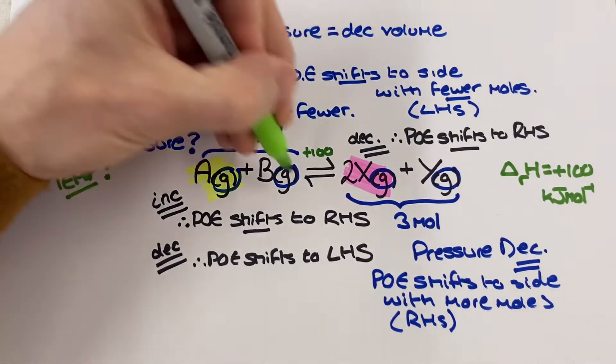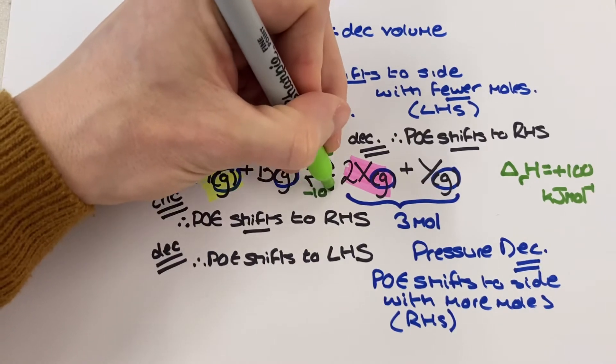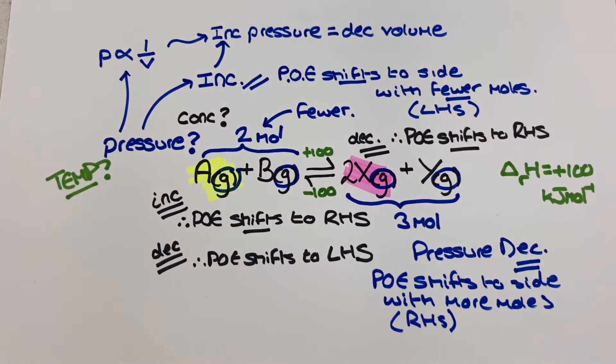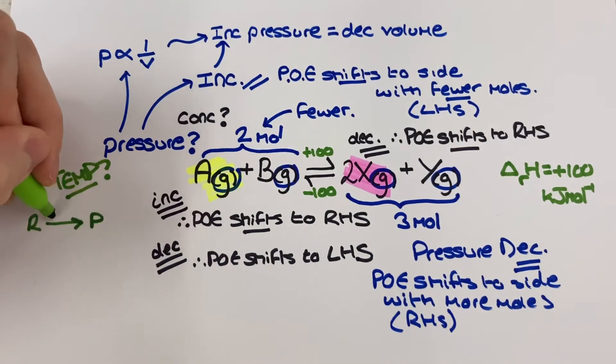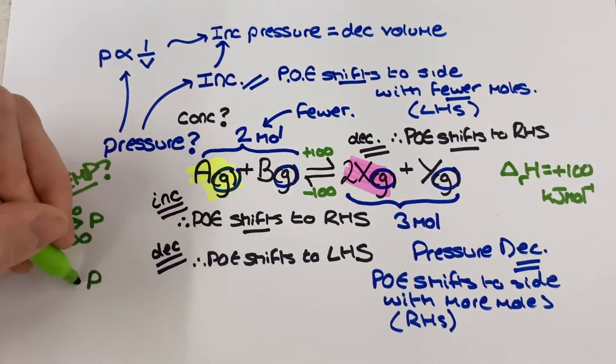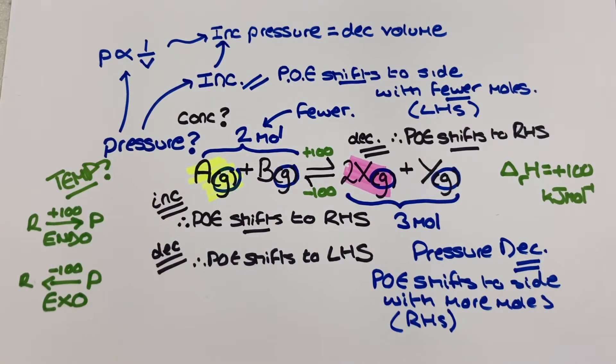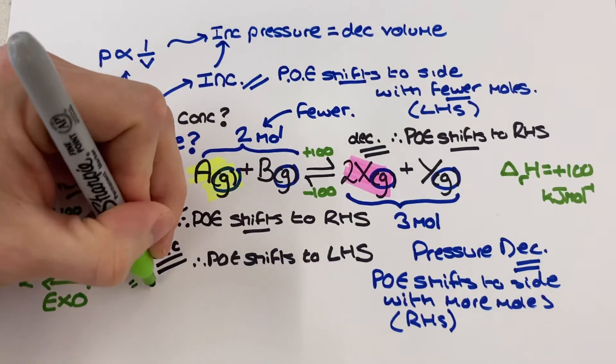Once we have this information we then consider that the reverse reaction will have an equal and opposite enthalpy change. This means we have a new perspective that we can consider our equilibrium to have an endothermic direction and an exothermic direction.